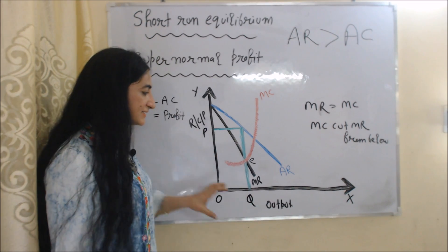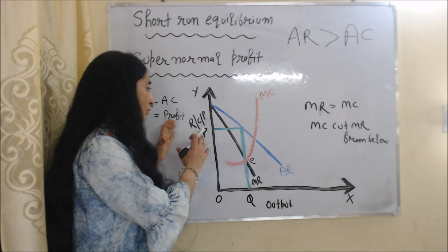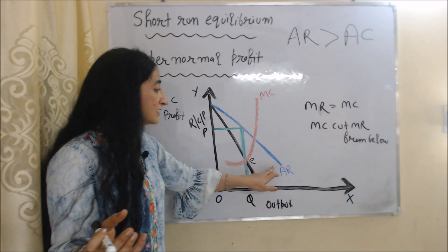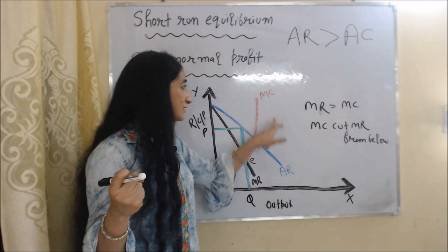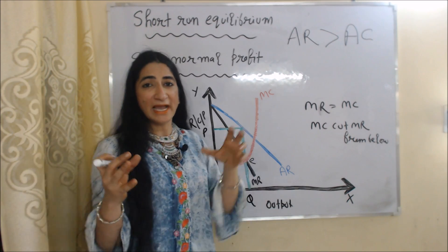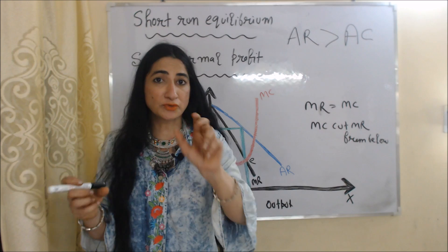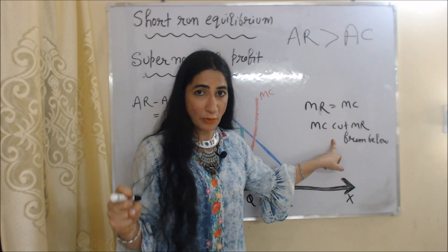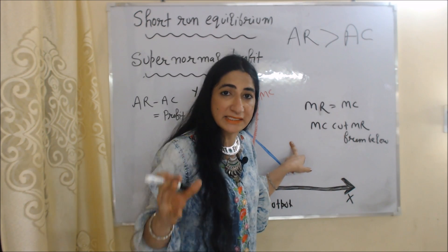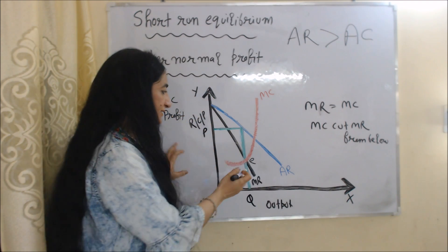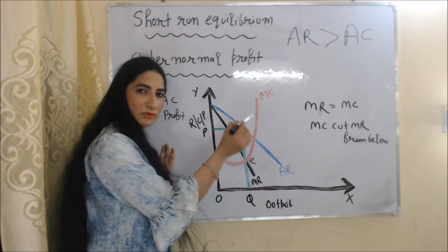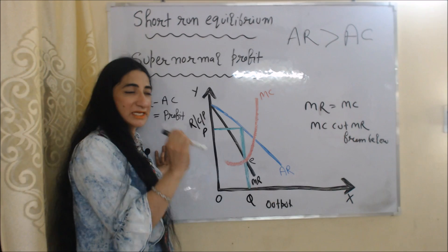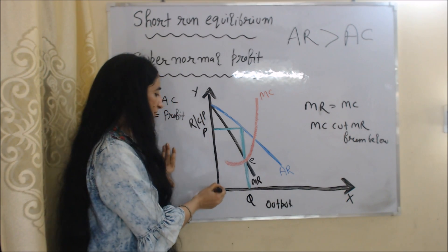In this diagram, the X-axis has output and the Y-axis has revenue, cost, and price. The black curve is MR, the blue curve is AR, and the red curve is MC. As discussed earlier, two conditions must be satisfied for equilibrium: MR equal to MC and MC cutting MR from below. These two conditions remain the same in all equilibria. At point E, both conditions are met, so E is our equilibrium point. OQ is equilibrium output and OP is equilibrium price.